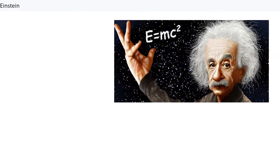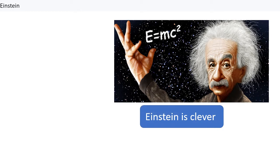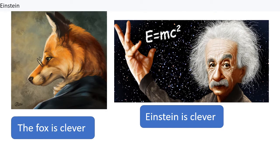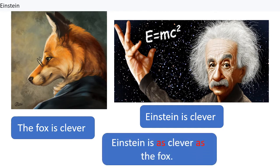Now, let's go to talk about if we want to talk about two things that share the same characteristics. Einstein is clever and the fox is clever. Einstein and the fox have the same adjective or share the same characteristics. We want to say that Einstein is as clever as the fox.